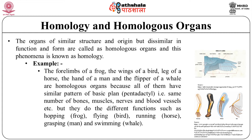For example, the forelimb of a frog, the wings of a bird, the leg of a horse, the hand of a man and the flipper of the whale are homologous organs because all have the same basic plan — pentadactyly, that is, the same number of bones, muscles, nerves and blood vessels — but they perform different functions such as flipping, flying, running, grasping and swimming. Phylloclades of Opuntia and cladodes of Ruscus are homologous organs as both are modified stems. Similarly, a thorn of Bougainvillea and a tendril of Cucurbita are homologous as both arise in the axillary position.